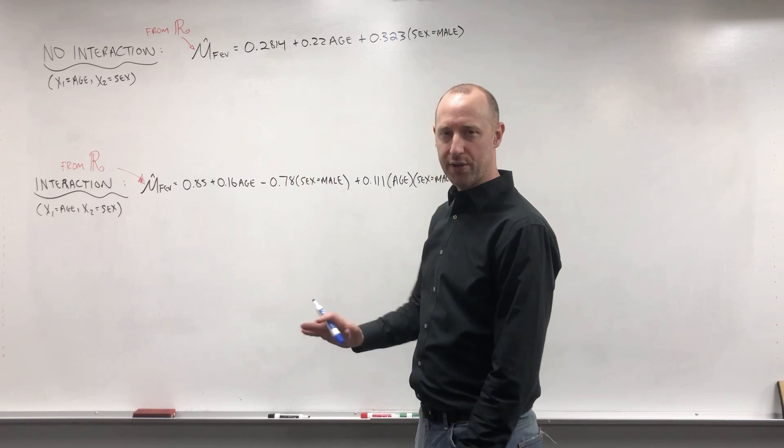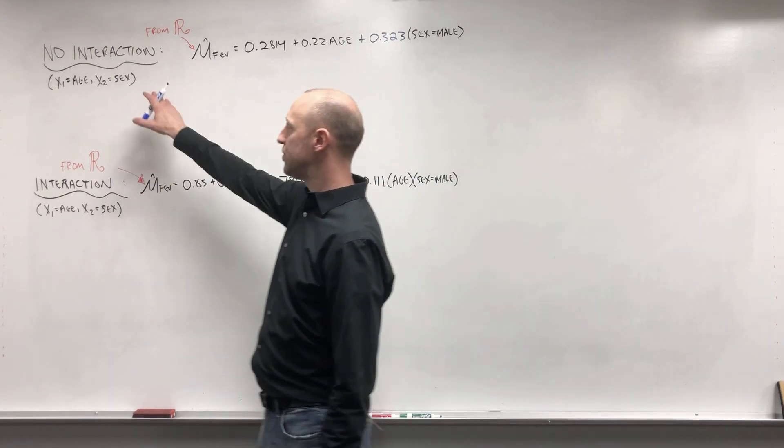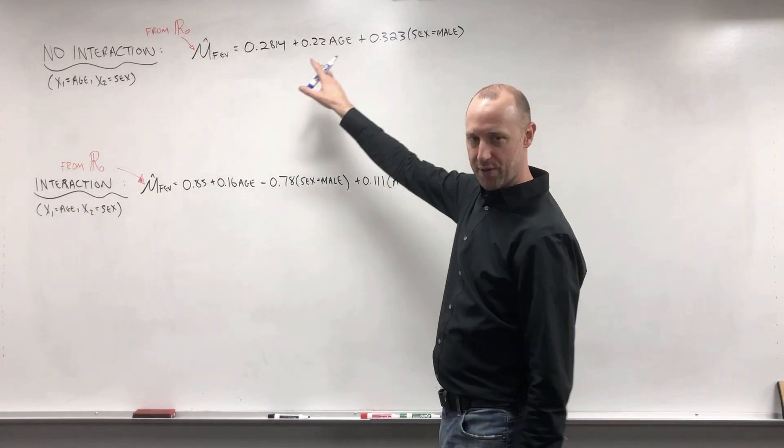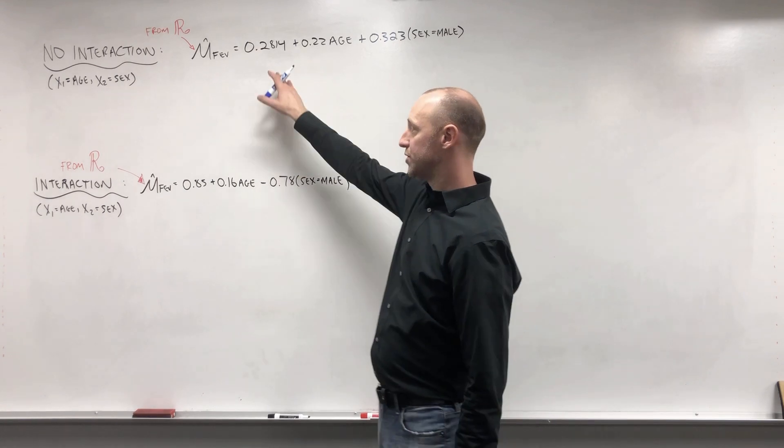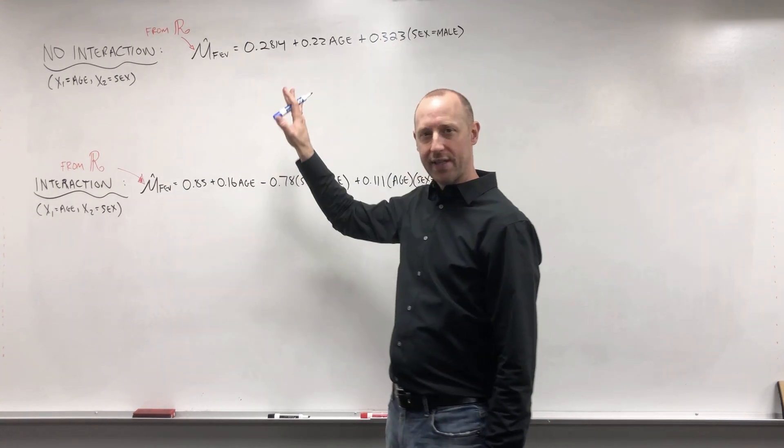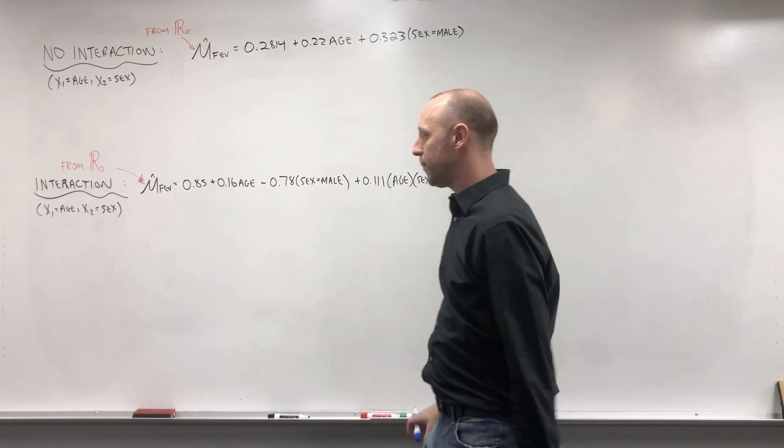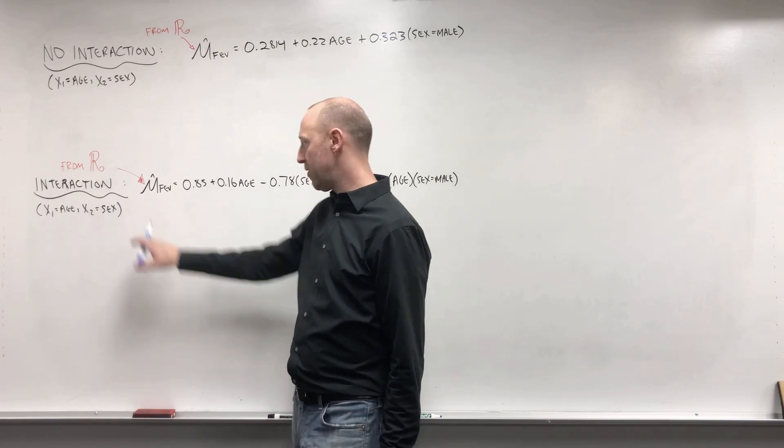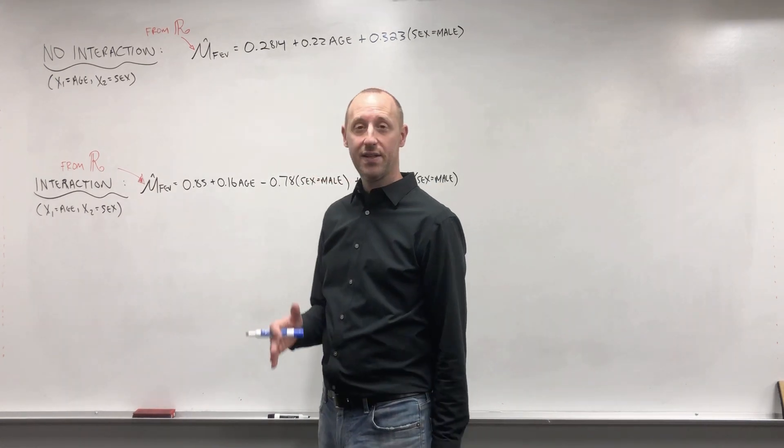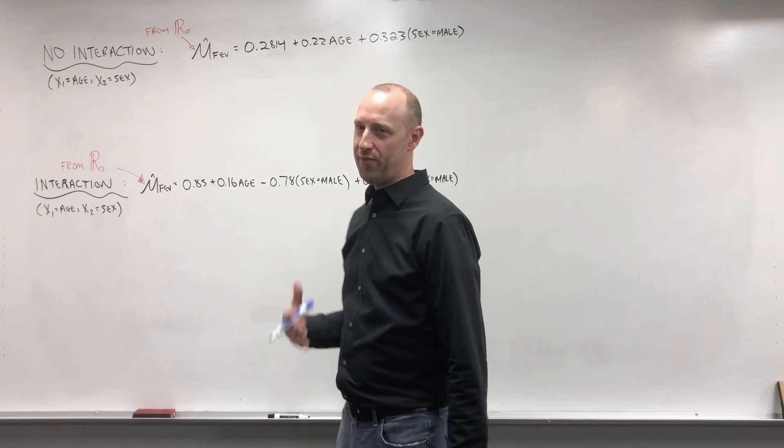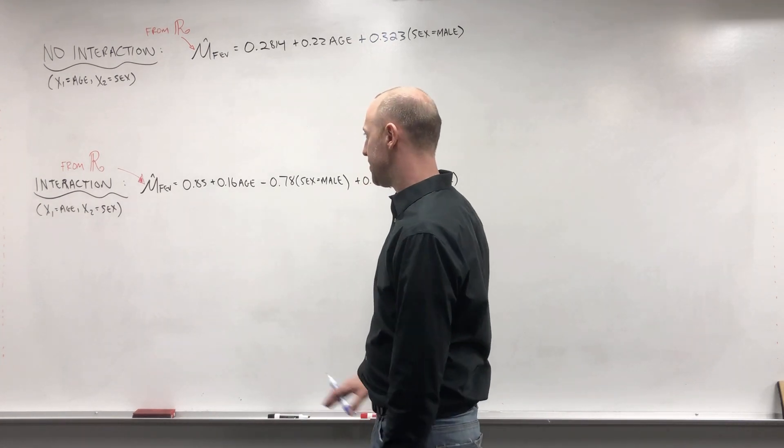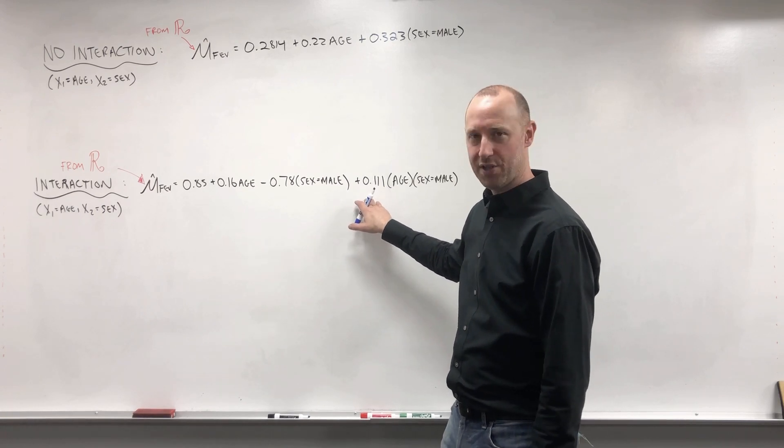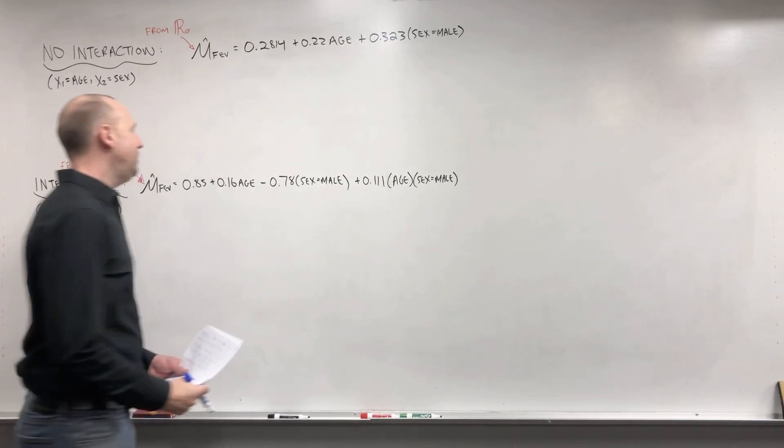What I've done is gone through in R, you can look at that separate video. First I fit the model with no interaction or no effect modification. I got this from R, so this is the model that forces them to have parallel lines. You can look at that separate video to see exactly how I got this from R. And I've also fit the model including an interaction or effect modification, so allowing the effect of age to change for males or females or the effect of sex to change depending on age. And here's the model you would get.